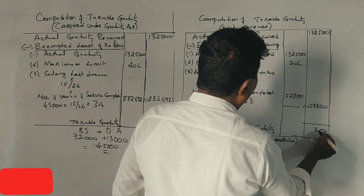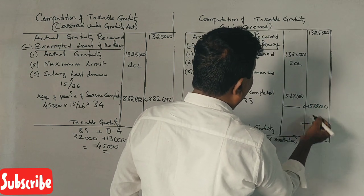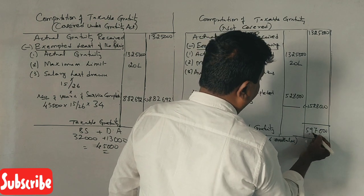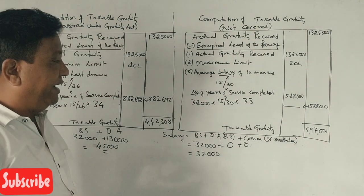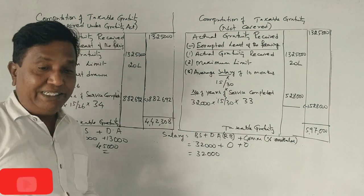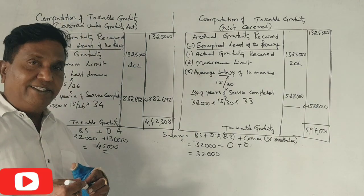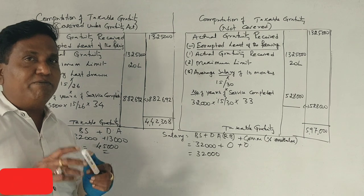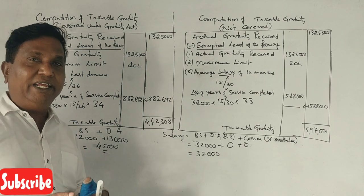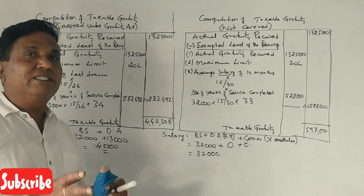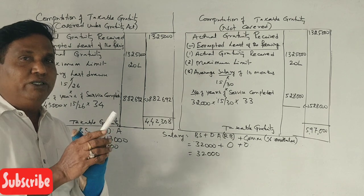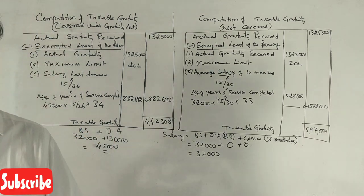So the taxable amount is 7,97,000. So if you have any questions, you can practice this problem which carries 6 marks. Thank you so much.